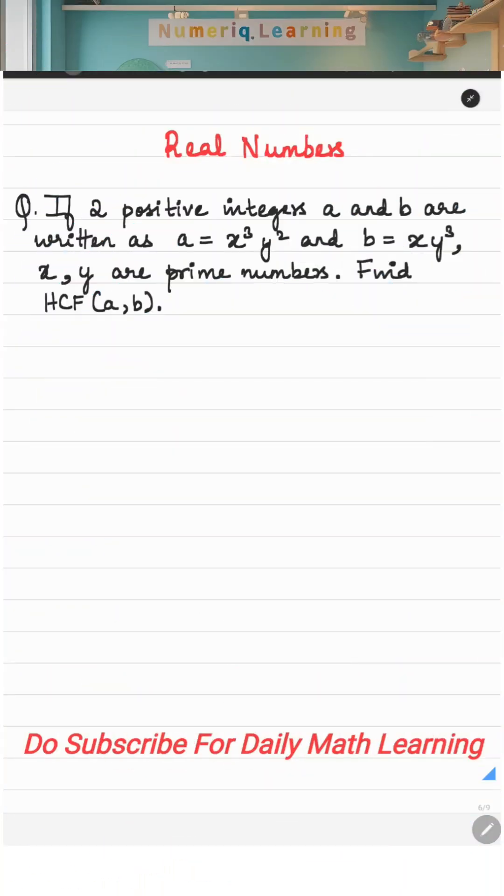Hello everyone, welcome to numeric learning. In today's video, let us solve a problem from real numbers. The question is: if two positive integers a and b are written as a equals x cube y square and b equals x into y cube, where x and y are prime numbers, find the HCF of a and b.